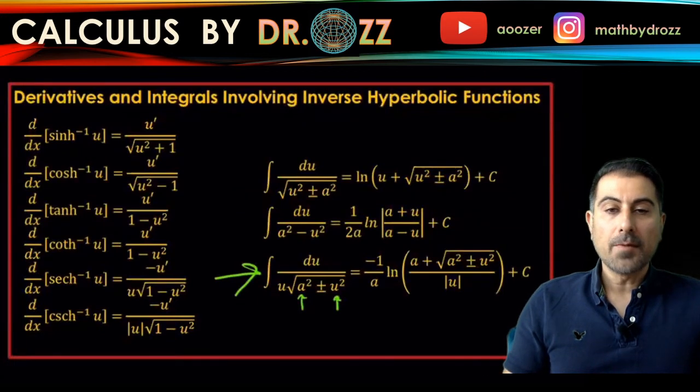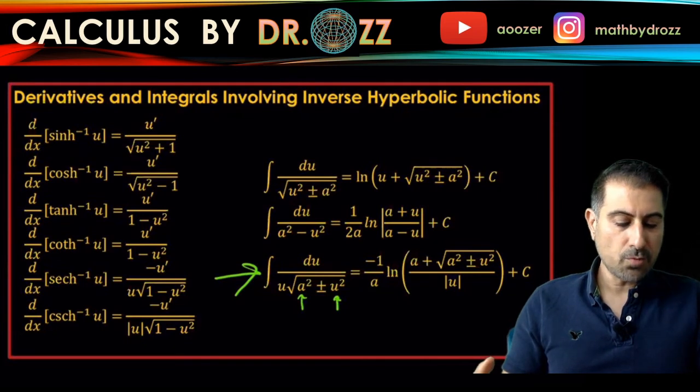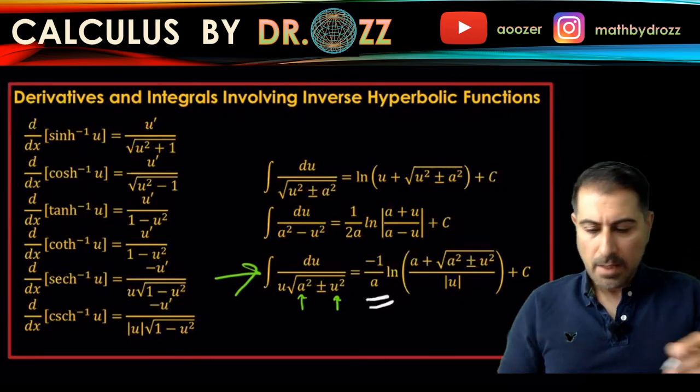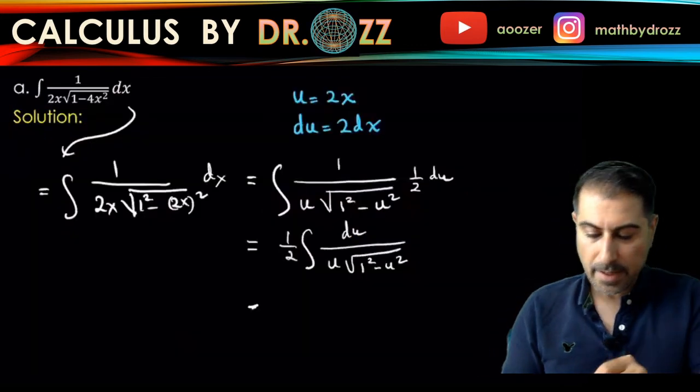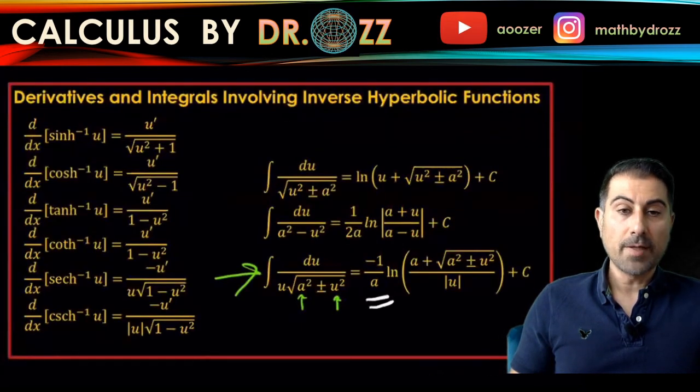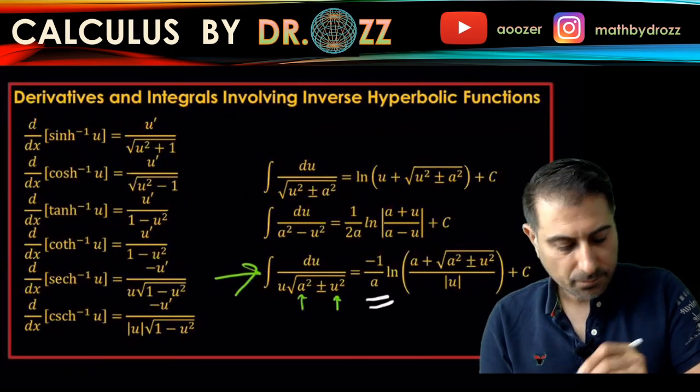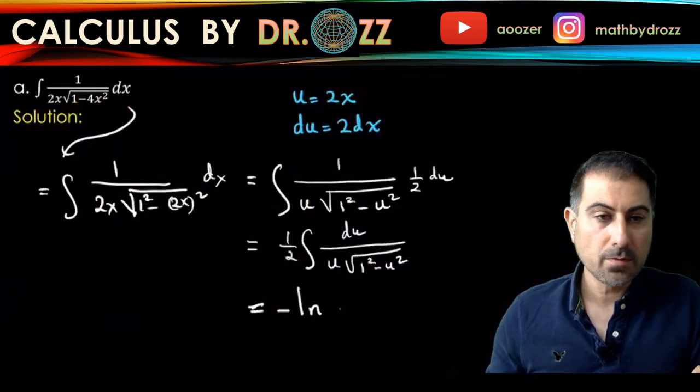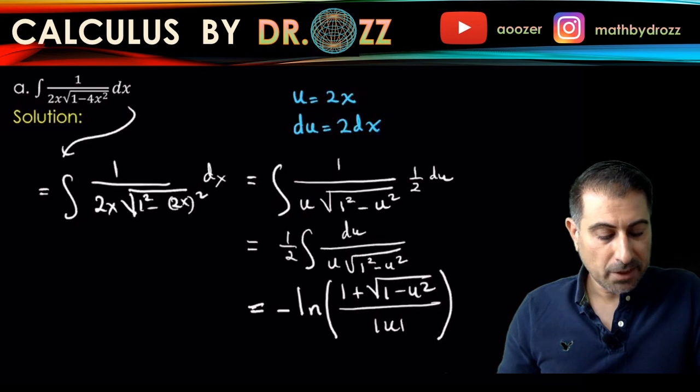Because I have 1 squared minus u squared, so a equals one. So it's minus one over one, that's minus one, ln. So let's go back here, minus ln. And a is one, so one plus one minus u squared divided by absolute value of u. At the top we have one plus one minus u squared divided by absolute value of u plus c.